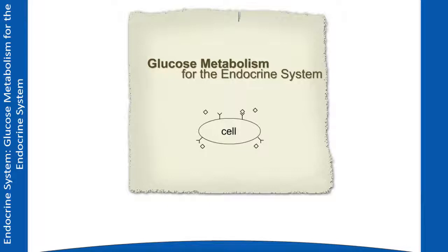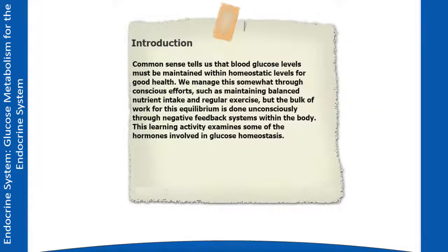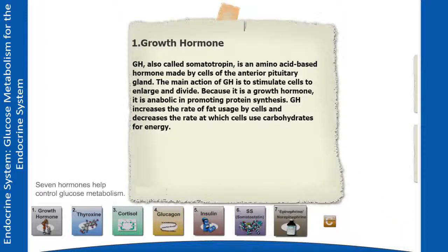Glucose metabolism for the endocrine system. Common sense tells us that blood glucose levels must be maintained within homeostatic levels for good health. We manage this somewhat through conscious efforts such as maintaining balanced nutrient intake and regular exercise, but the bulk of work for this equilibrium is done unconsciously through negative feedback systems within the body. This learning activity examines some of those hormones involved in glucose homeostasis. Seven hormones help control glucose metabolism.